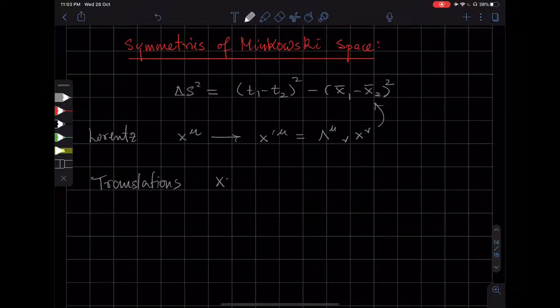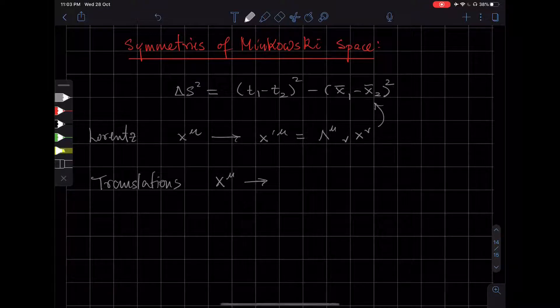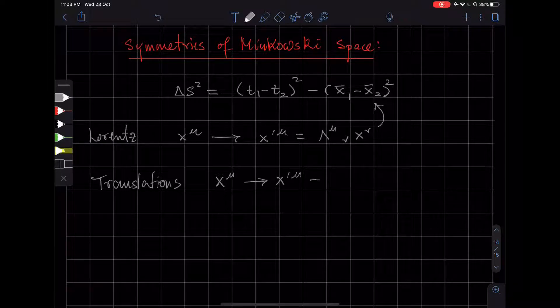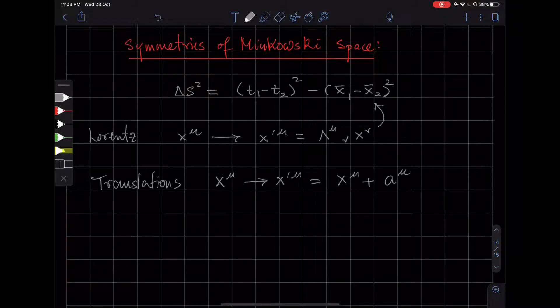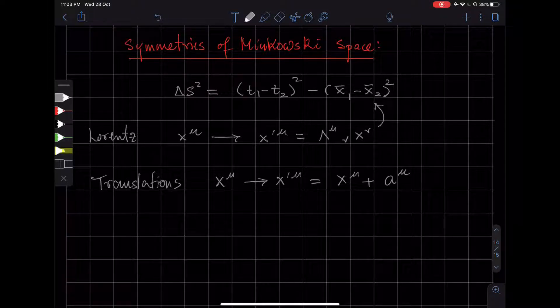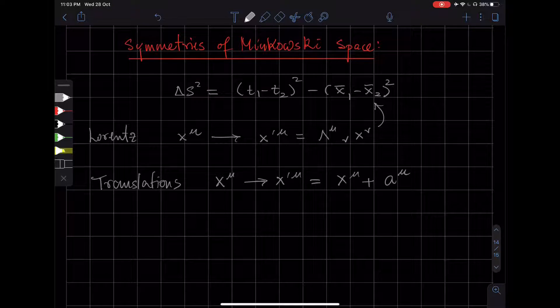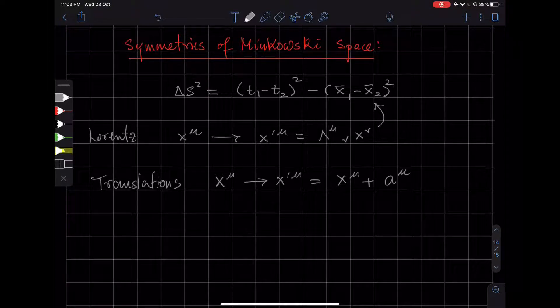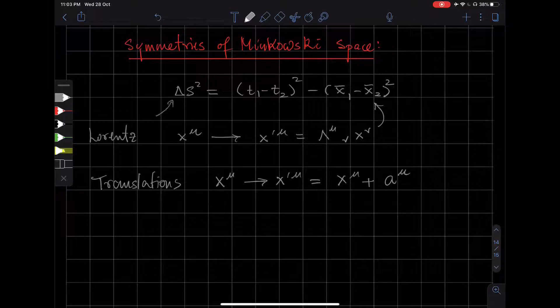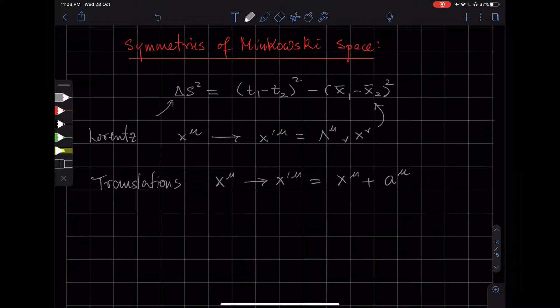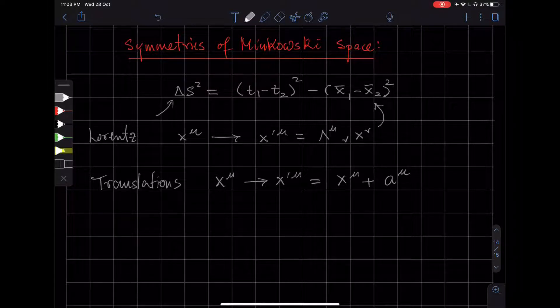So what are translations? It's just moving in space and time. If I translate my whole space by a constant amount, so A is a constant both in space and time direction, or in any direction, then that is also going to leave this invariant. That should be quite obvious. So this is a group called the translation group, these transformations.